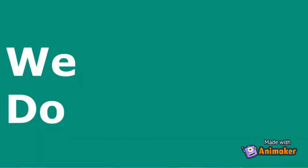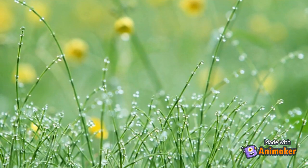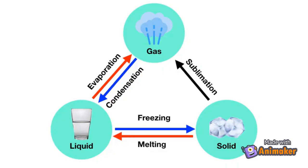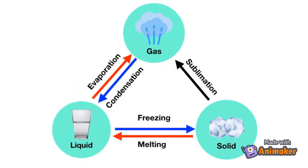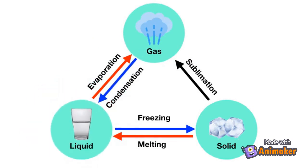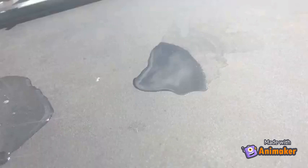Let's practice some of these together. If you wake up on a cold morning, you sometimes see liquid water on the grass. This water comes from water vapor in the air turning back into liquid water. What is it called when a gas turns back into a liquid? That is called condensation.